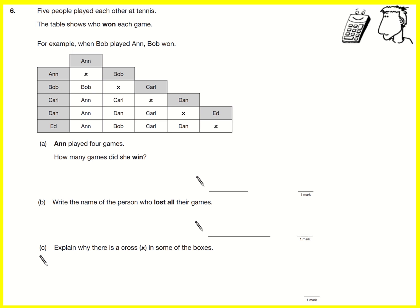Anne played four games, how many did she win? Well all her games are in this column. You can see she played four. She lost to Bob but she won the other three. So she won three games.